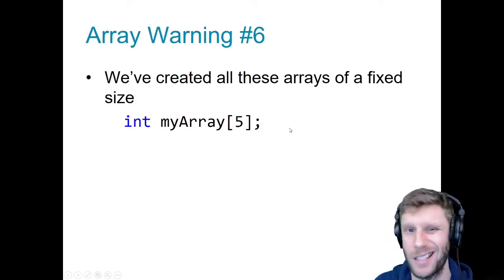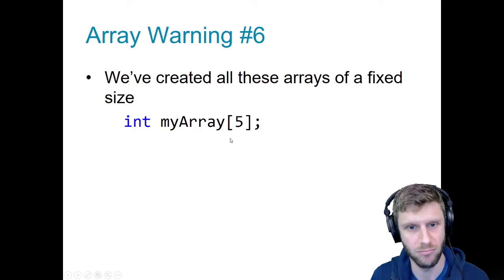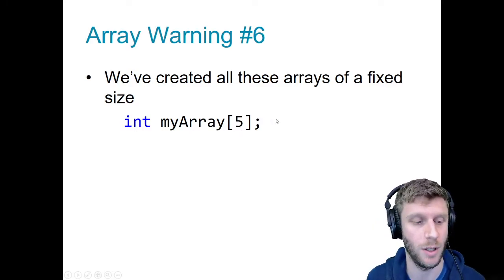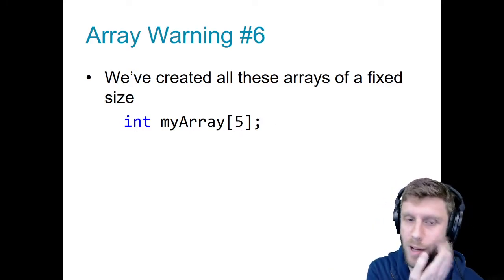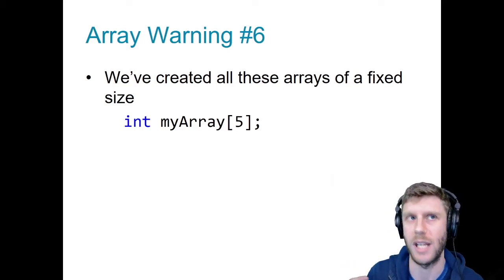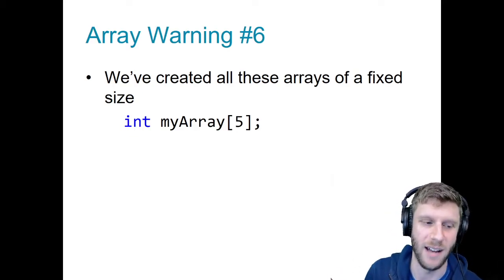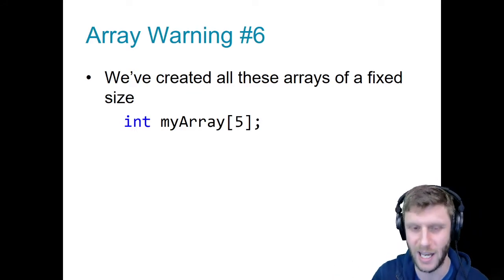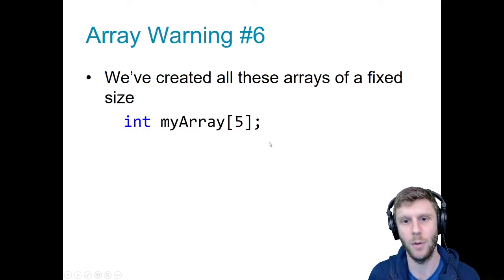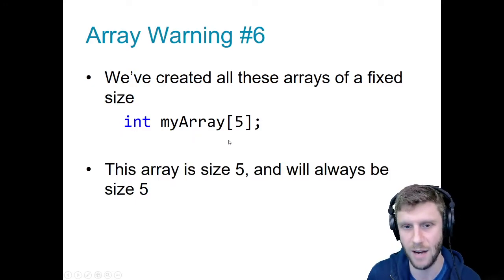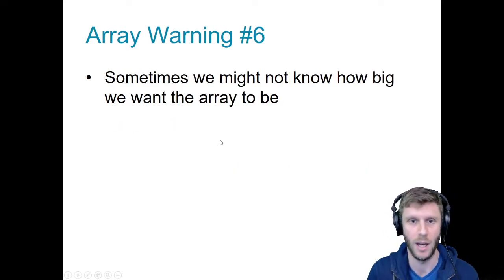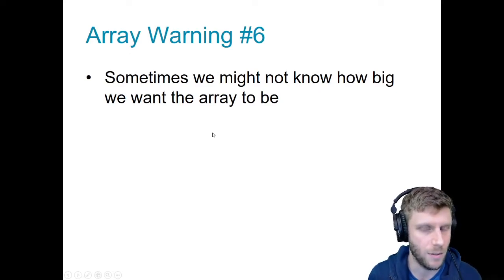So we've created all these arrays of fixed size. When I say int my_array[5], the computer goes and allocates five contiguous chunks of RAM and stores the information there. We can actually use more than the five we've created, but we really shouldn't. Int my_array[5], length five — perfect. But here, we've got a bit of a problem because the size of this array is always going to be five. We write this code, I hit run, this array is always going to be size five.